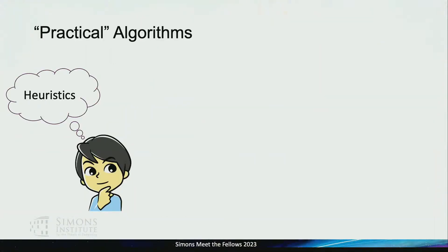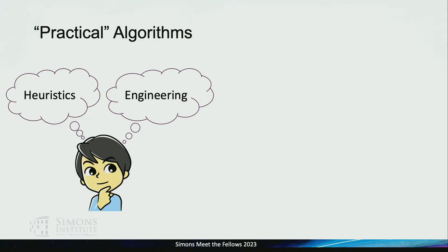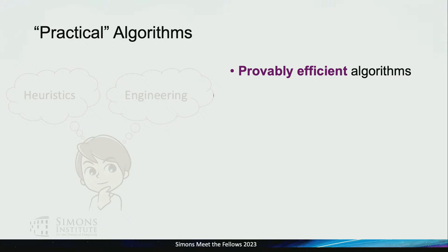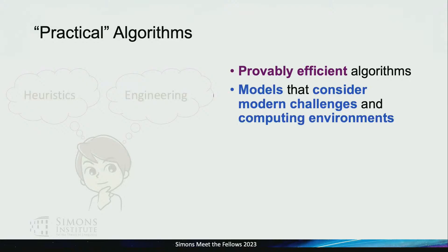When a theorist hears the word 'practical,' you might think about heuristics or lower-level engineering to make perhaps suboptimal algorithms perform well in practice. While this is very important for algorithm engineering, this is not the focus of my talk today. I'll be focusing on provably efficient algorithms — algorithms with good theoretical guarantees — but in models that consider these modern practical challenges and new computing environments.